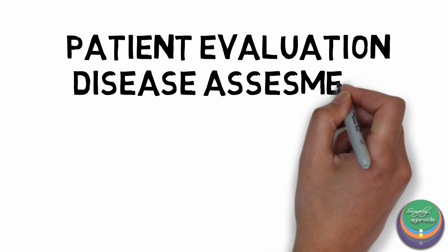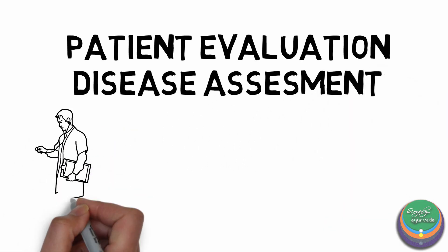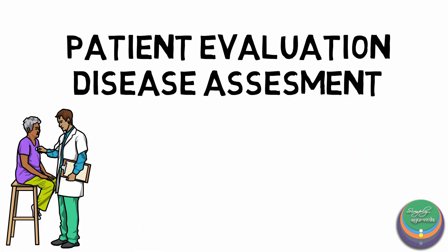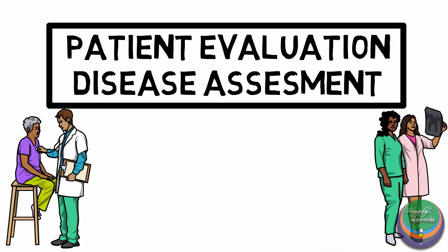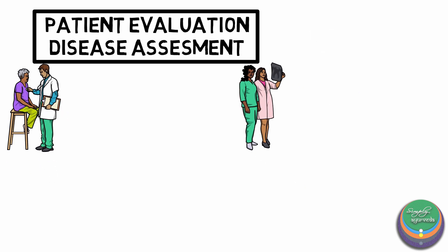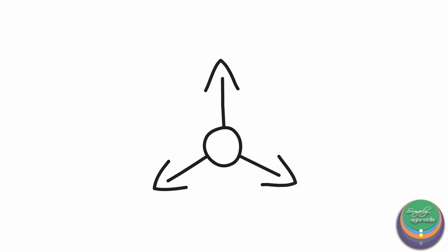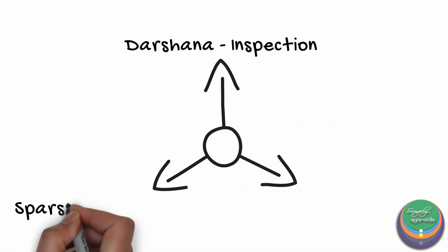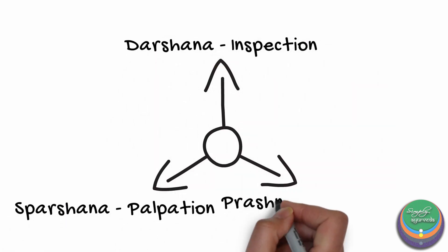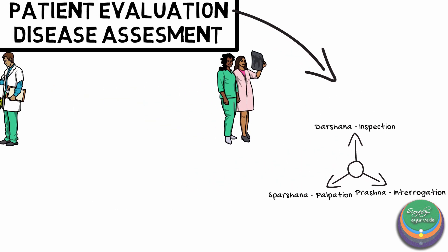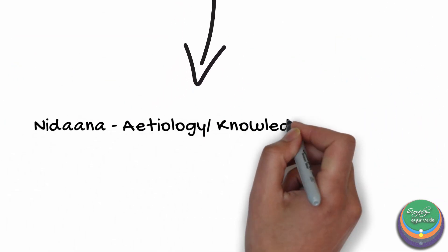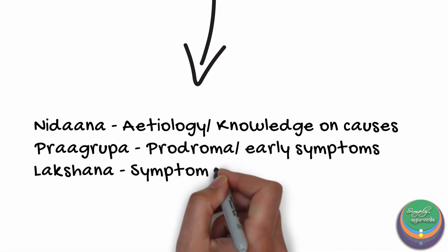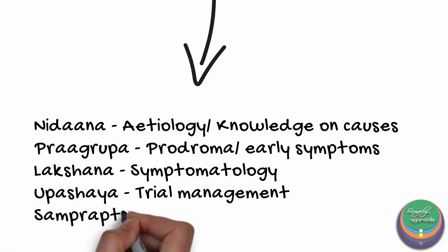The major areas where Pariksha are utilized by an Ayurvedic Vaidya are Patient Evaluation and Disease Assessment. Three methods are utilized in patient examination: Darsana or Inspection, Sparsana or Palpation, and Prashna or Interrogation. The assessment of disease is five-fold: Nidana, Pragrupa, Lakshana, Upashaya, and Samprapti.